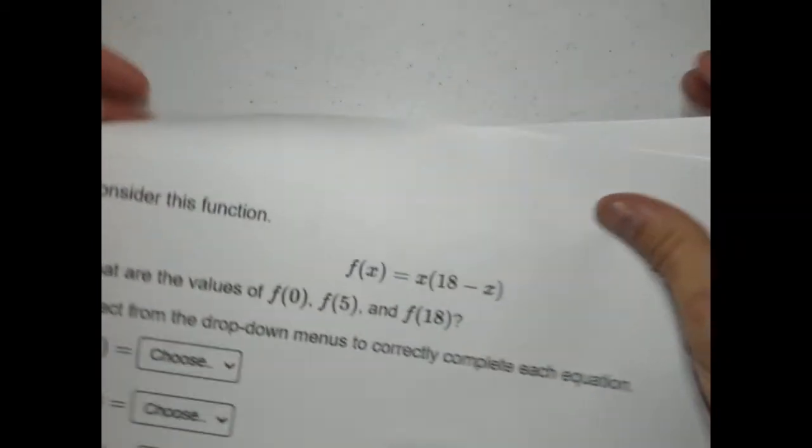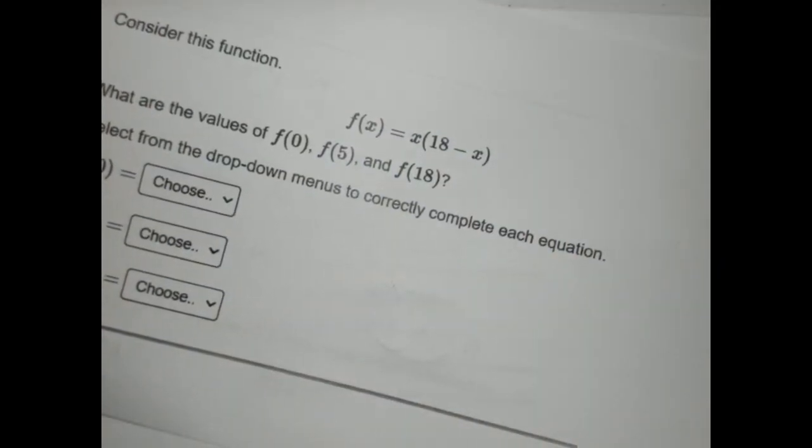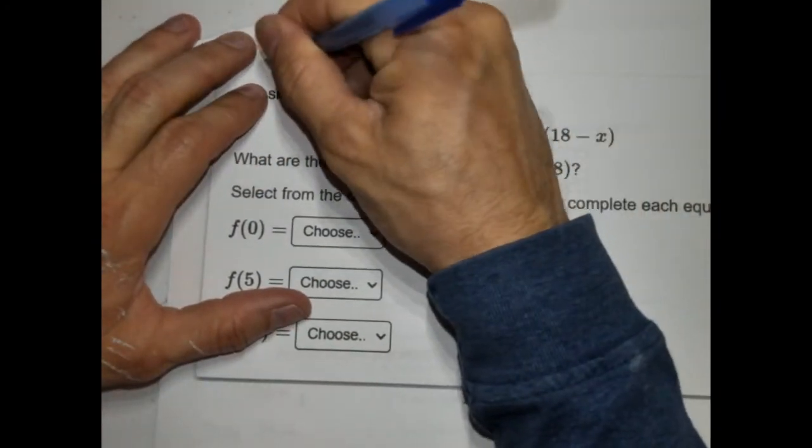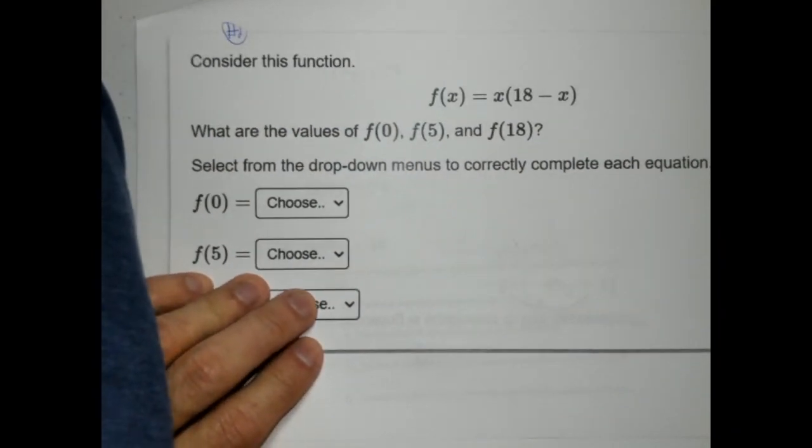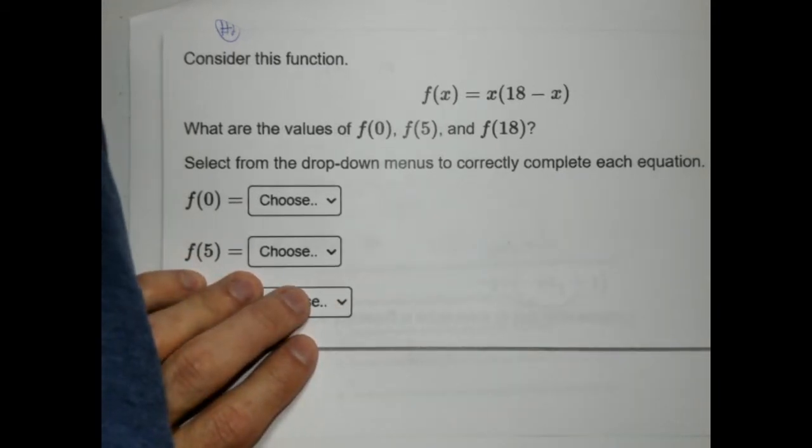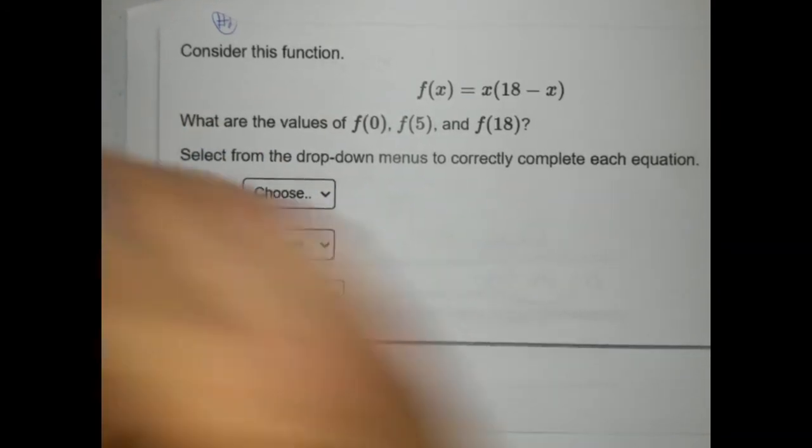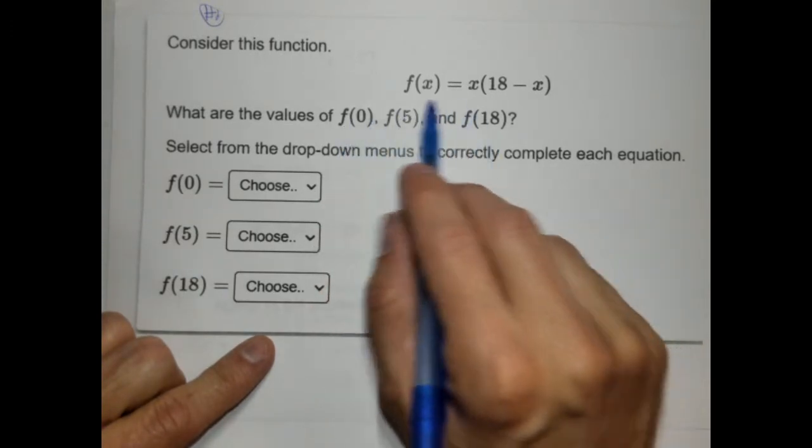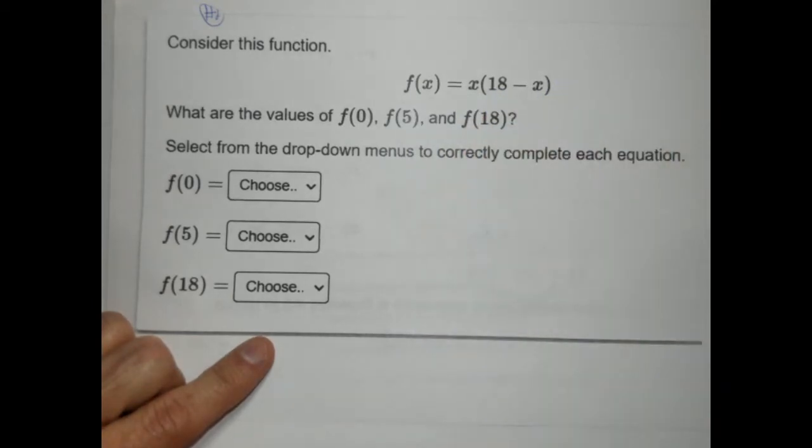Number 2. This one is all about function notation. We've had plenty of practice with that. There's actually three options for each of these when you're using the drop-down menu. They ask you three questions. Find f(0), find f(5), find f(18), when f(x) is equal to x(18 - x).